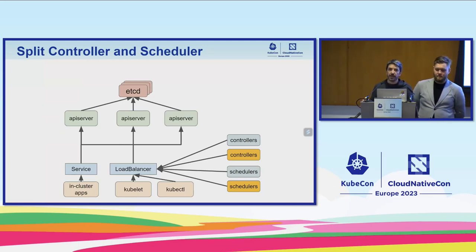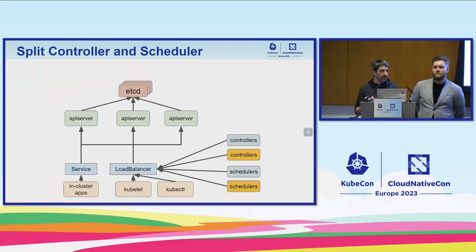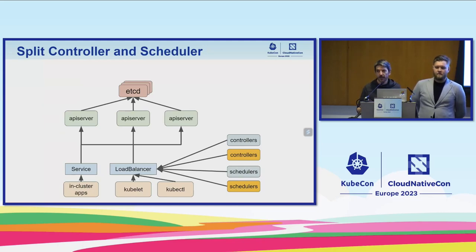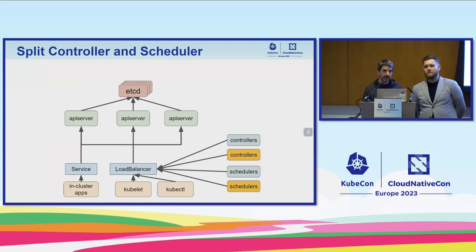If you've run large Kubernetes clusters, you've probably been impacted by having a large spike of events. Events are a specific resource, and sometimes they end up consuming 80 to 90% of the space of your HCD clusters. This can impact the behavior of the cluster, and events are not really that useful. So a common optimization for large clusters is to split out a dedicated HCD for events. You end up with an HCD dedicated for the event resource, so if there's a big spike of events, the rest of the control plane continues to work normally.